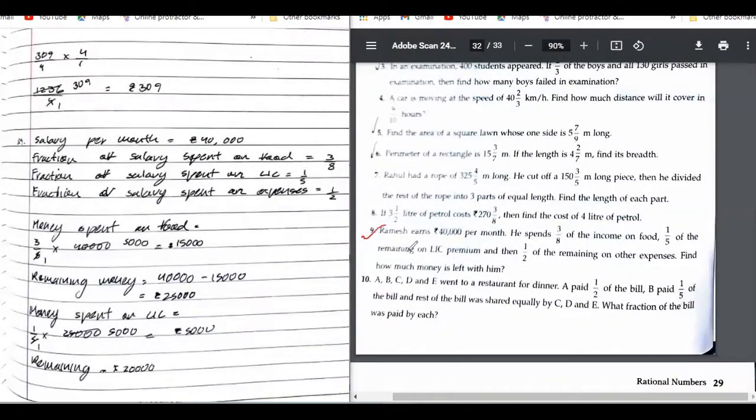Let us start with question number 9. Ramesh earns 40,000 per month. He spends 3/8 of his income on food and one-fifth of the remaining on LIC premium. The word remaining is very important.